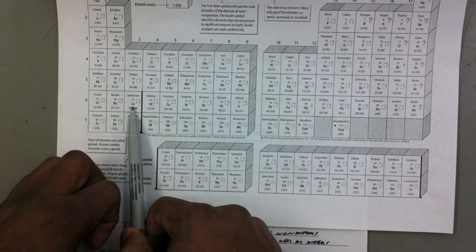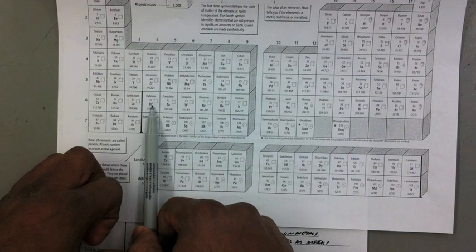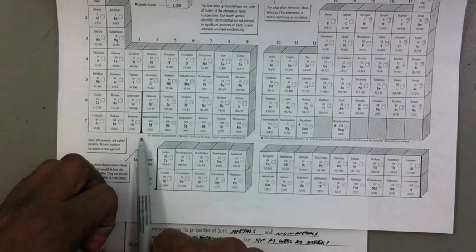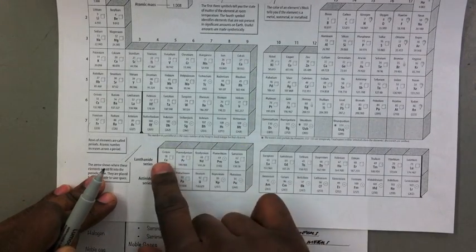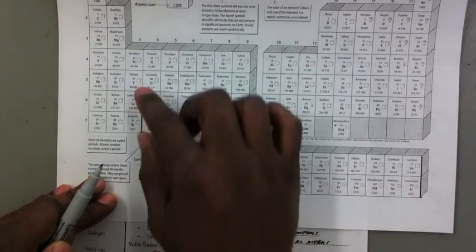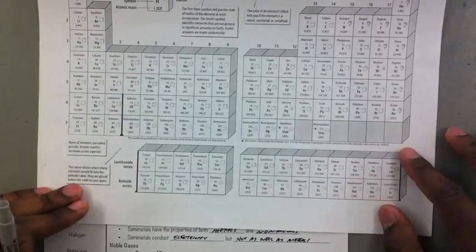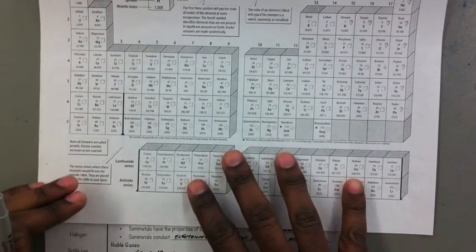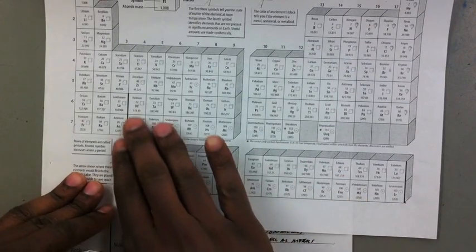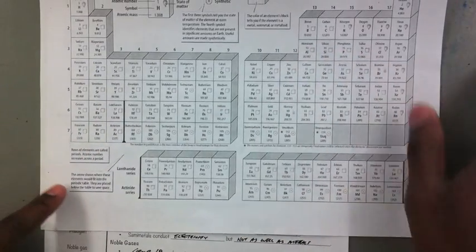You'll notice that lanthanum is element number 57, but instead of 58 being next to it, it's down here. You can see a dark line here. It says these elements, which are 58 through 71 and 90 through 103, have been taken from here where this dark line is and put down here. This is done to save space. You can assume that if the lanthanide and actinide series were put into the periodic table, it would be a lot wider.